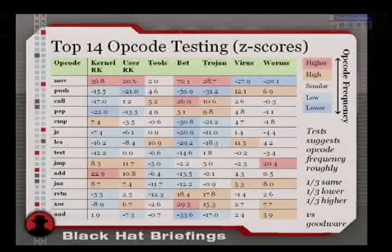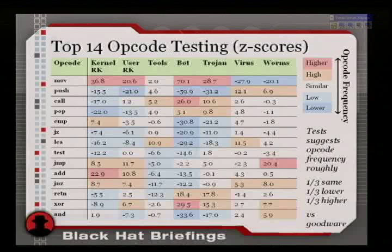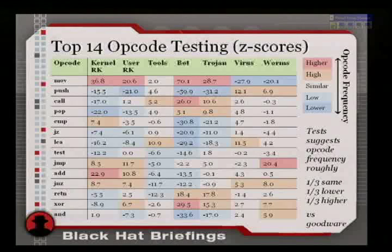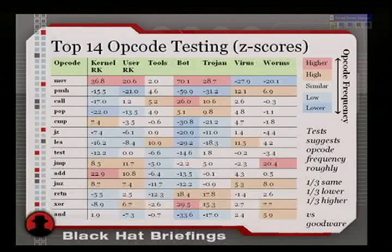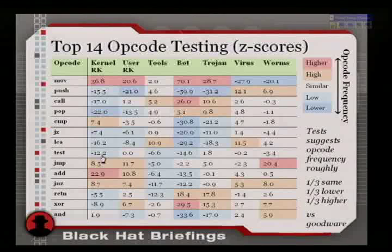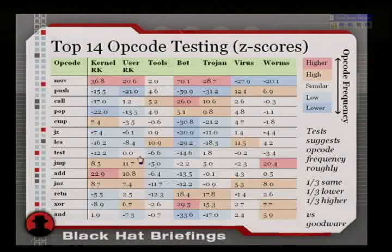What you should get from the slide: I color-coded it for visual convenience. Darker means higher or lower discrepancies, white means similar, darker red or blue means different. We can see, for instance, that the kernel rootkit has practically everything significantly different from the normal stuff. Tools seems roughly two-thirds different, and worms, for some odd reason, look similar.